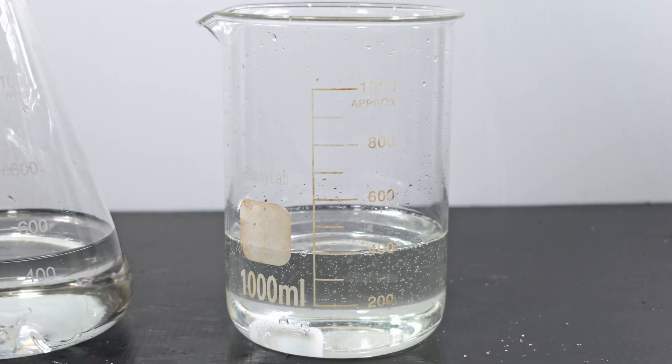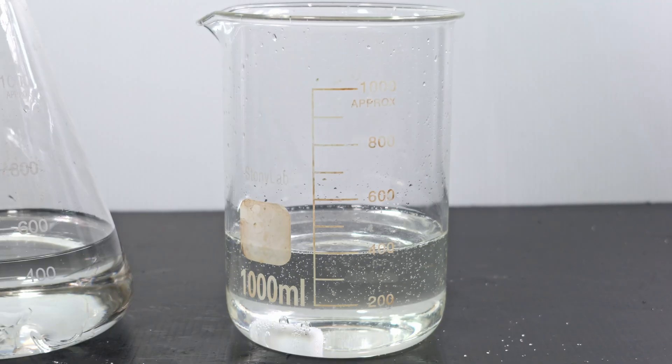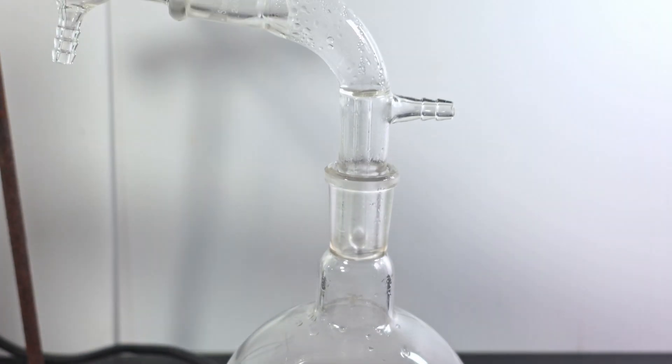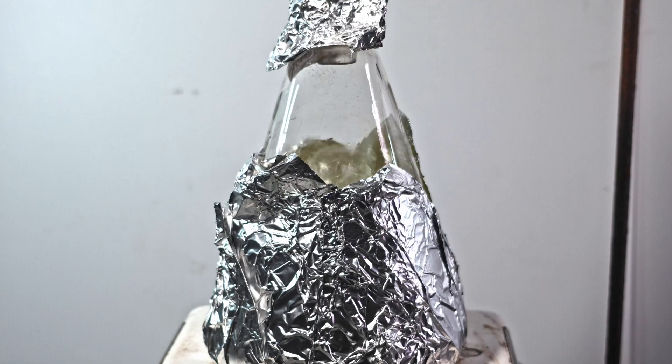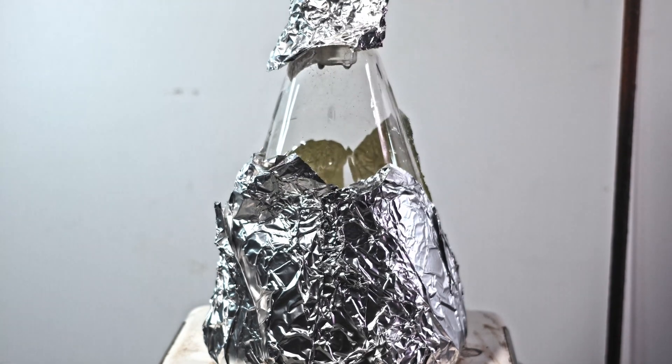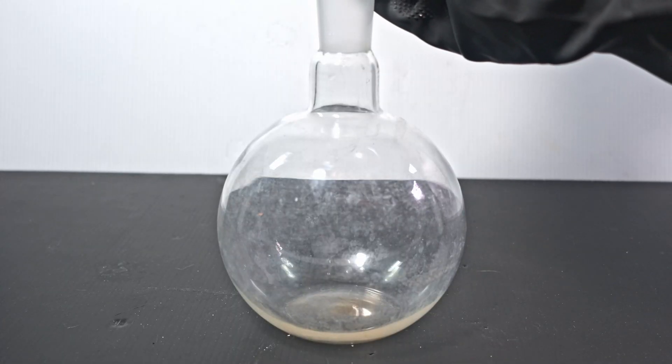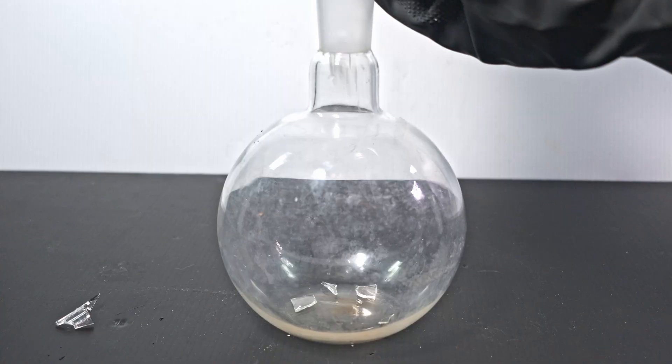But if you want a more dehydrating acid, well, you gotta actually dehydrate it. Dehydrating sulfuric acid requires extremely high temperatures, but even that doesn't guarantee a smooth distillation. To help with boiling, I add in some glass from a broken flask I've had for a while.